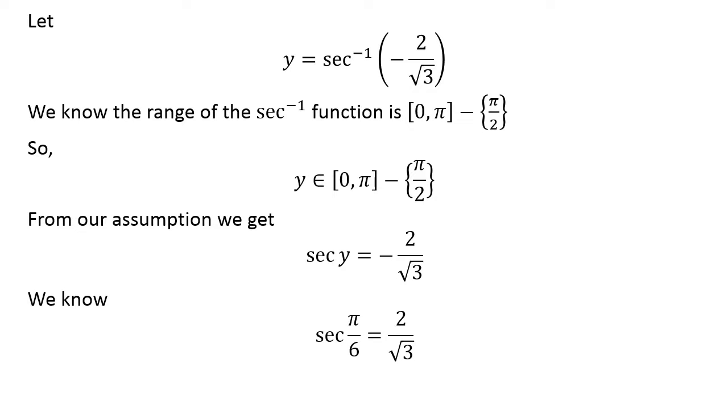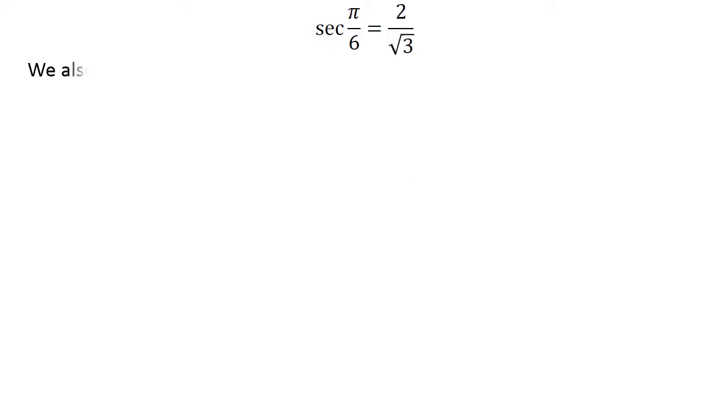We know secant of pi upon 6 is equal to 2 upon square root of 3. We also know the trigonometry identity secant of pi minus x is equal to minus secant of x.